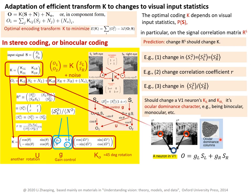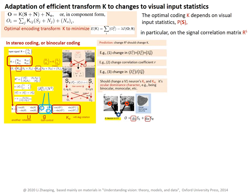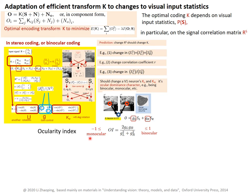In our notation, we call these sensitivities GL and GR. To see how the ocular dominance for each neuron adapts to input statistics, we define for each V1 cell an ocularity index through GL and GR — its sensitivity to the left and right eye input. This index is always within the range between minus one and plus one. When GL equals GR, the cell is completely binocular, giving an index of plus one. When GL equals minus GR — opposite excitation or inhibition — the index equals minus one.